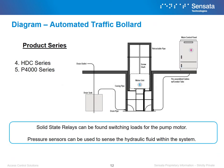This is an example of an automated traffic bollard and where our various solutions can be found within the system. Our solid state relays can be found switching the loads for the motor that powers the pump, while our pressure sensors can be used to sense the hydraulic fluid within the system.